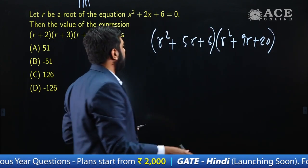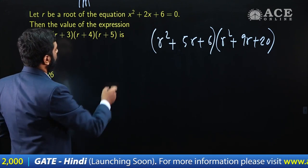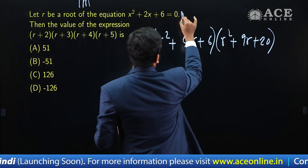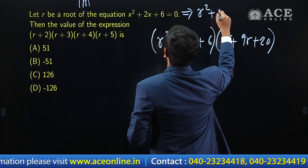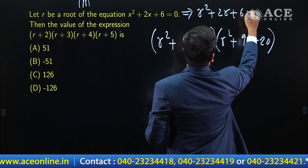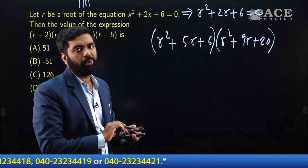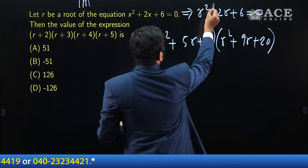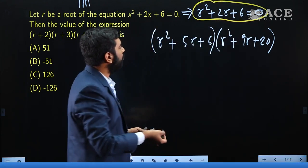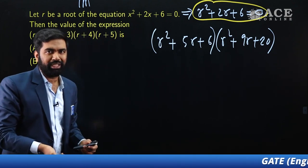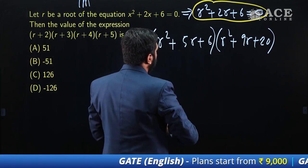He clearly said r is a root. So when r is a root, you put r into the equation. You get the condition: r² + 2r + 6 = 0. So wherever you have r² + 2r + 6, you can substitute 0. Now what I'll do is rewrite the expressions in terms of r² + 2r + 6.